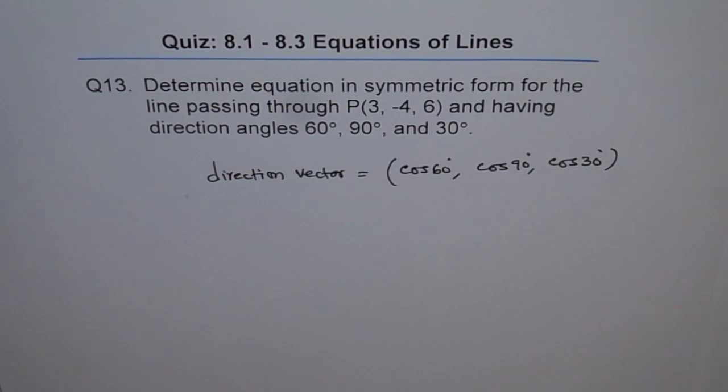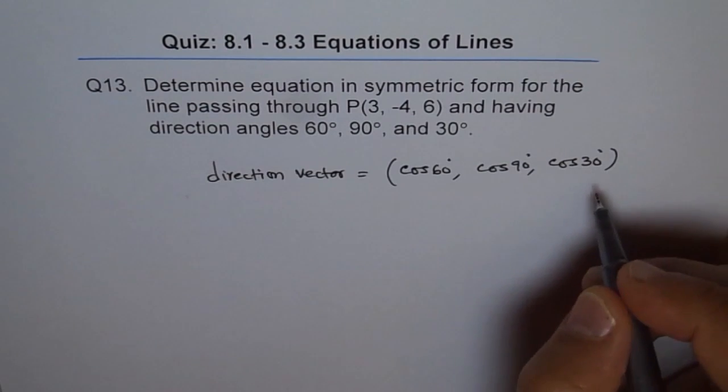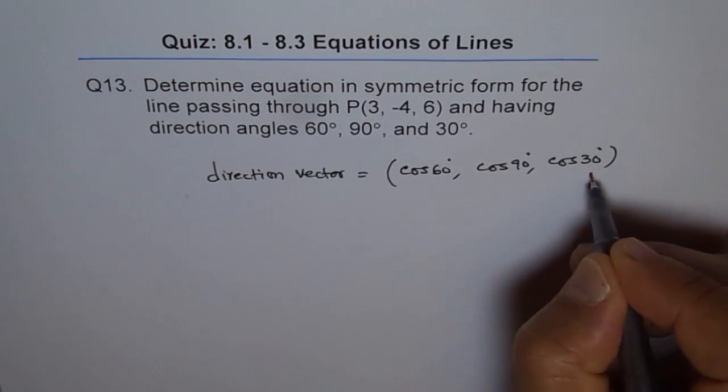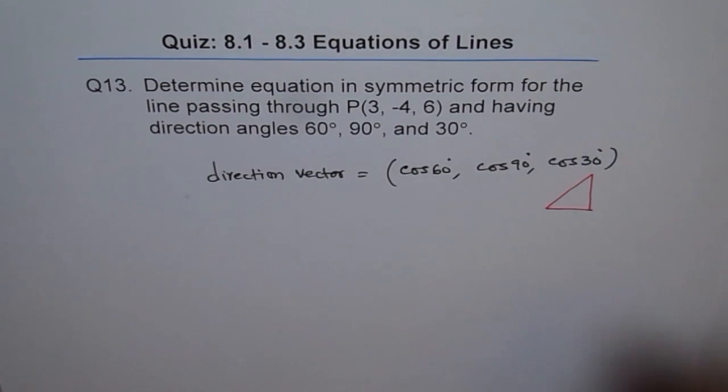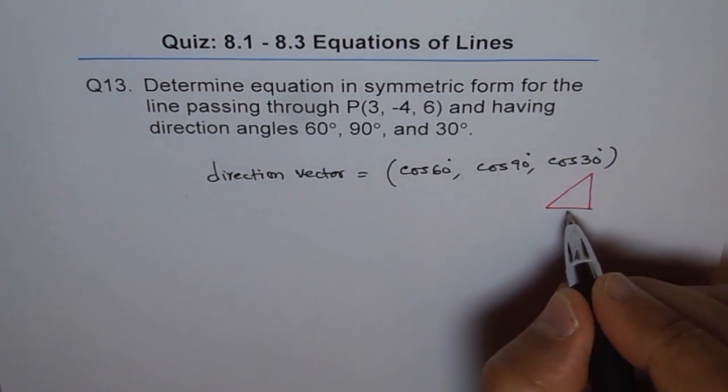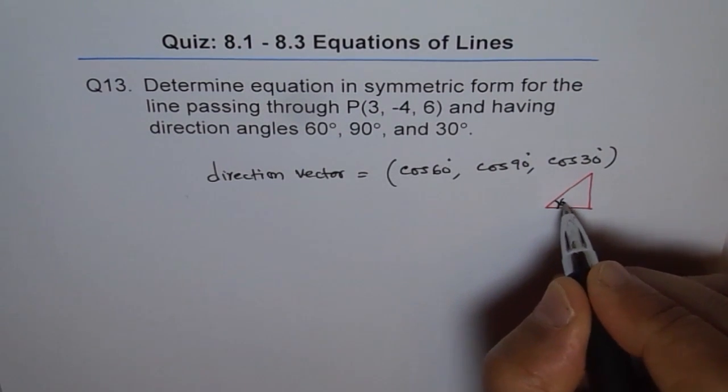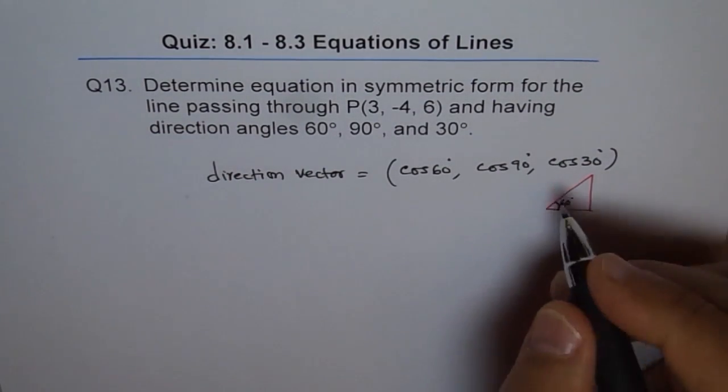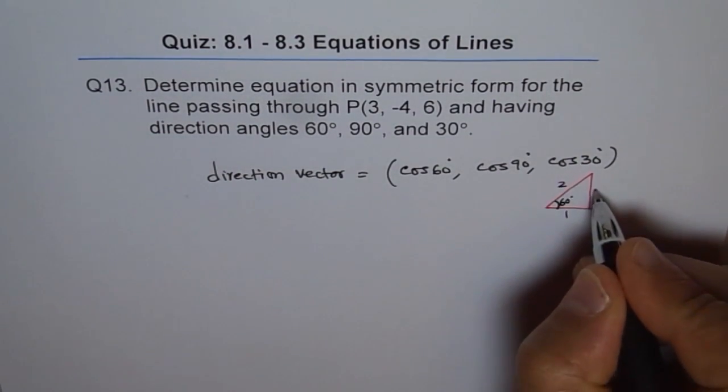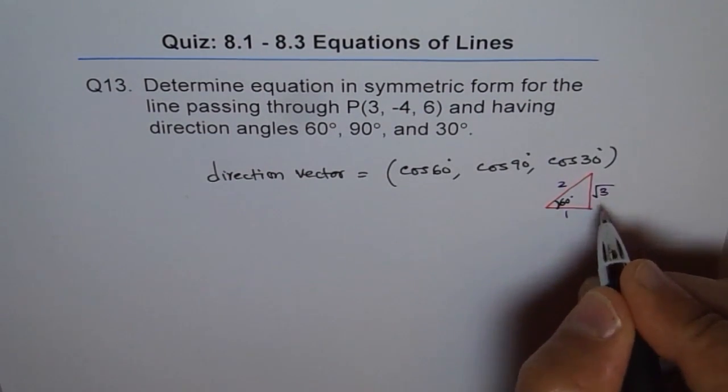Now, to find cos 60, 90 and 30 degrees you can always rely on your standard triangle. I hope you remember this. If it is 60 degrees here, then the sides are, you can say 2, 1 and square root 3. So we will use these values.